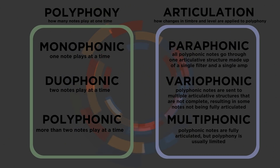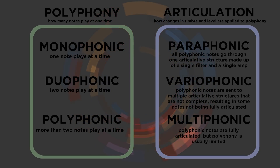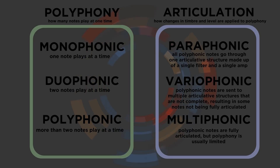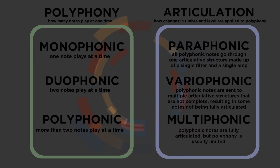Let's keep in mind: monophonic plays one note at a time, duophonic plays two notes at a time, and polyphonic plays three or more notes — irrespective of articulation. These terms — monophonic, duophonic, polyphonic — talk about note count. The other terms we've been discussing — paraphonic, variaphonic, and multiphonic — deal with how polyphonic notes are articulated. Now we have six terms that can be used together to describe the functionality of synthesizers from the past and keyboard-activated synthesizers from the present.